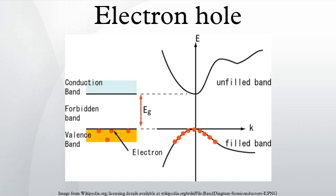The way an electron responds to forces is entirely determined by its dispersion relation. An electron floating in space has the dispersion relation E = ℏ²k²/2m, where m is the electron mass and ℏ is the reduced Planck constant. In the conduction band of a semiconductor, the dispersion relation is instead E = ℏ²k²/2m*, so a conduction band electron responds to forces as if it had the mass m*. Electrons near the top of the valence band behave as if they have negative mass. The dispersion relation near the top of the valence band is E = ℏ²k²/2m with negative effective mass. When a force pulls the electrons to the right, these electrons actually move left. This is solely due to the shape of the valence band, and is unrelated to whether the band is full or empty. If you could somehow empty out the valence band and just put one electron near the valence band maximum, this electron would move the wrong way in response to forces.